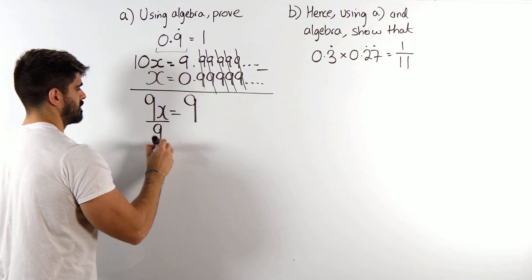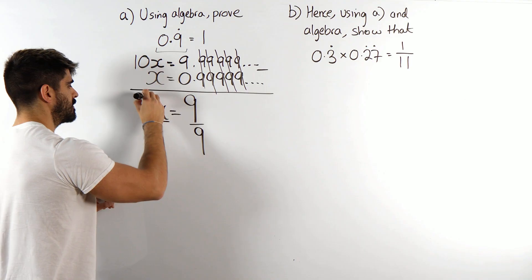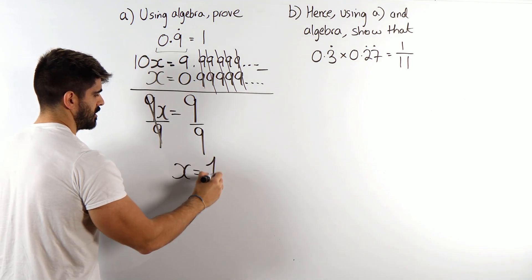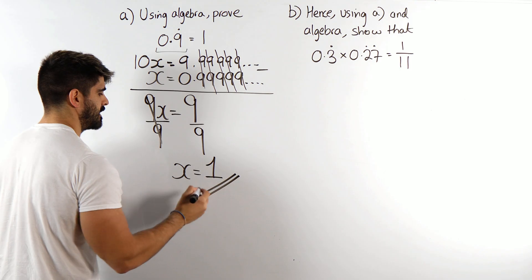We're just going to divide both sides by 9. Cancel. x is 1. And that is proved.